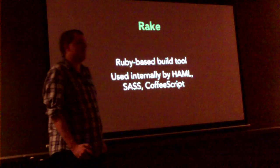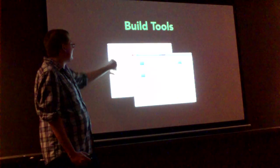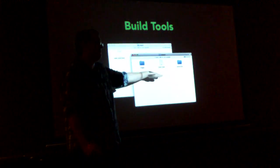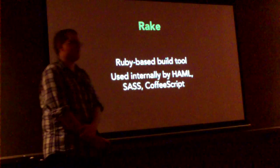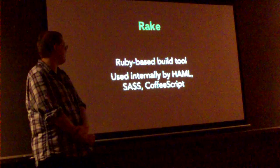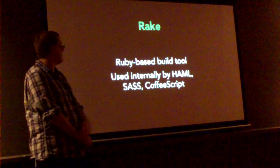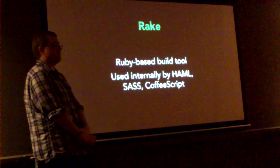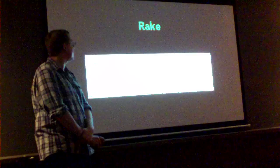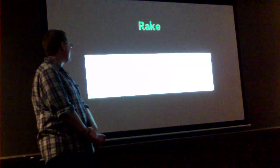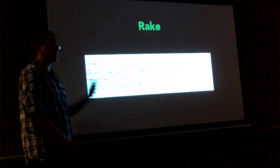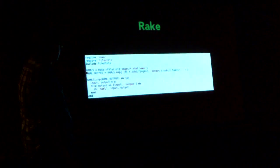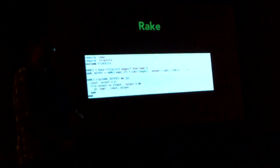One option you would have is to go through every page, run Haml for it, copy it to the right directory. The other option is to use RAP, which is a Ruby-based build tool that Haml has used internally by the developers. Here's a RAP file to run Haml on every page in the pages directory and put them all in the output pages directory.